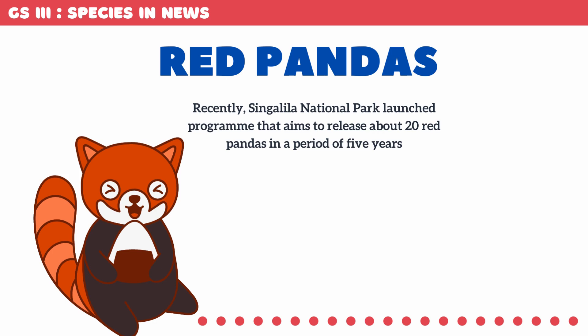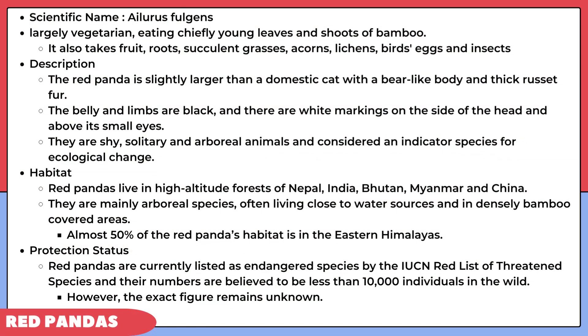Lastly, there's a species in news — Red Pandas. Recently, a program was launched in Singhaliya National Park which aims to release about 20 red pandas over a period of five years. The scientific name of red panda is Ailurus fulgens. They are largely vegetarian, mainly eating young leaves and bamboo shoots, and also take fruits, roots, grasses, acorns, lichens, birds' eggs, and insects. Red pandas are slightly larger than the domestic cat, with a bear-like body and thick russet fur, black belly and limbs, and white markings on the side of their head above small eyes.